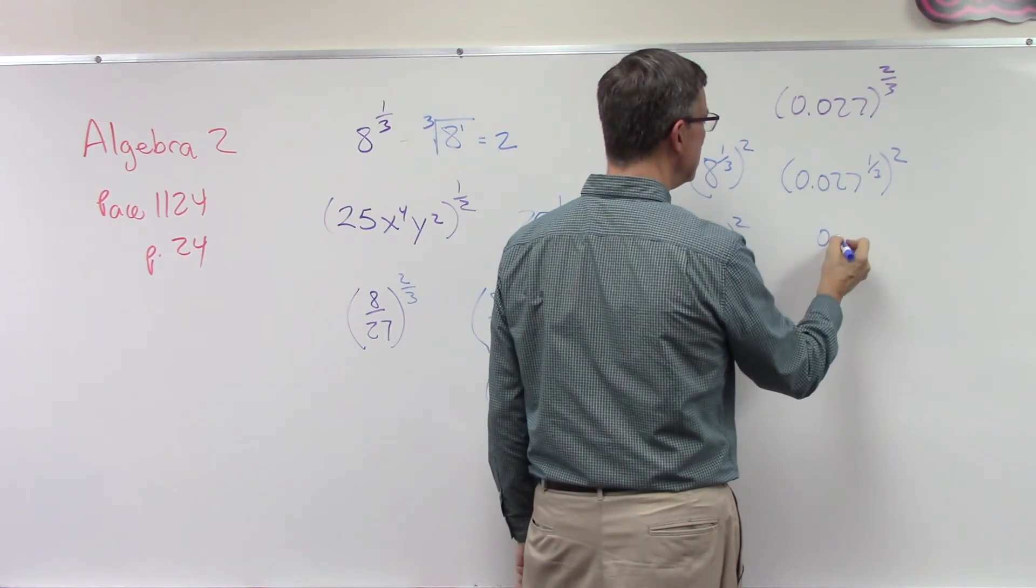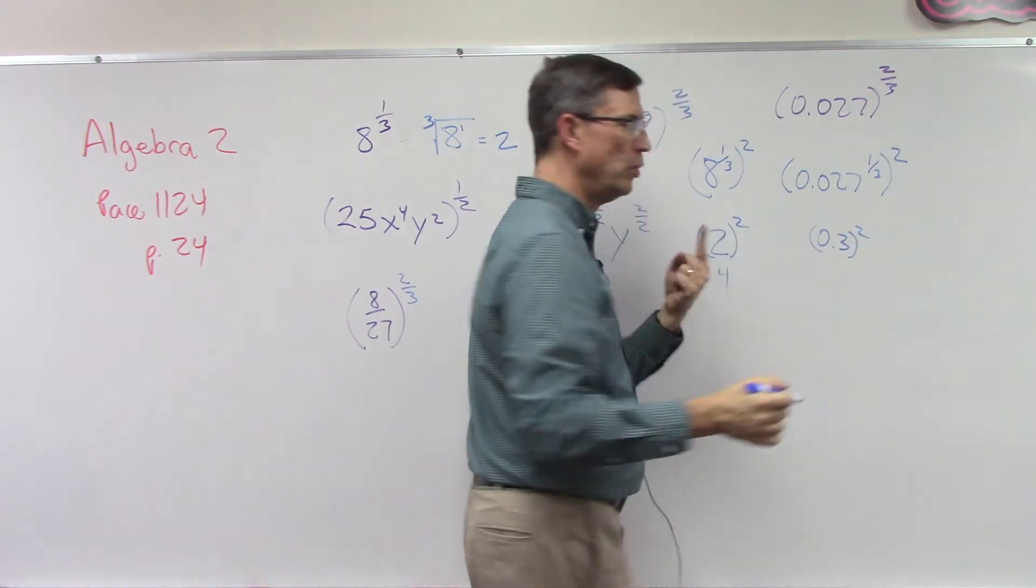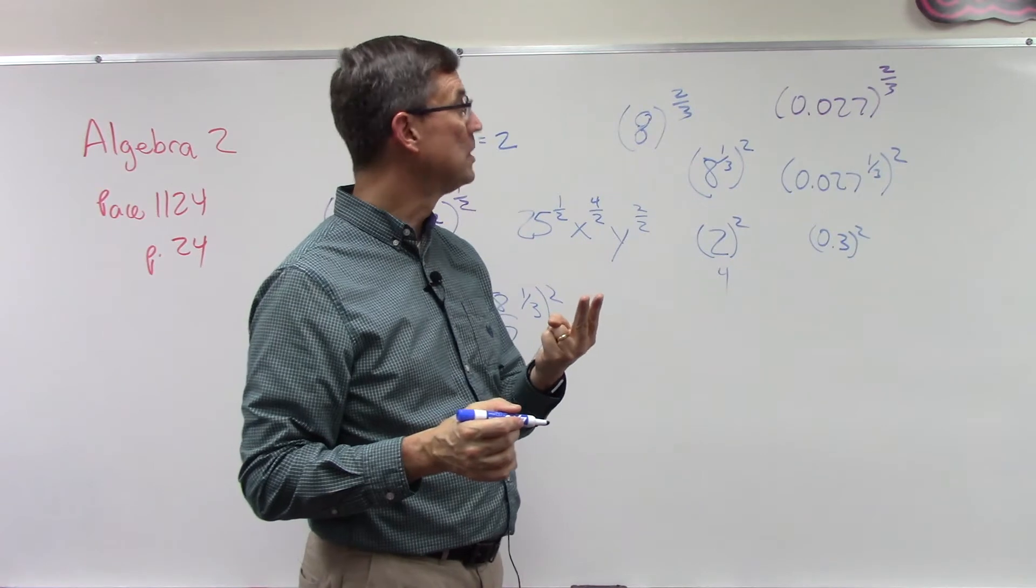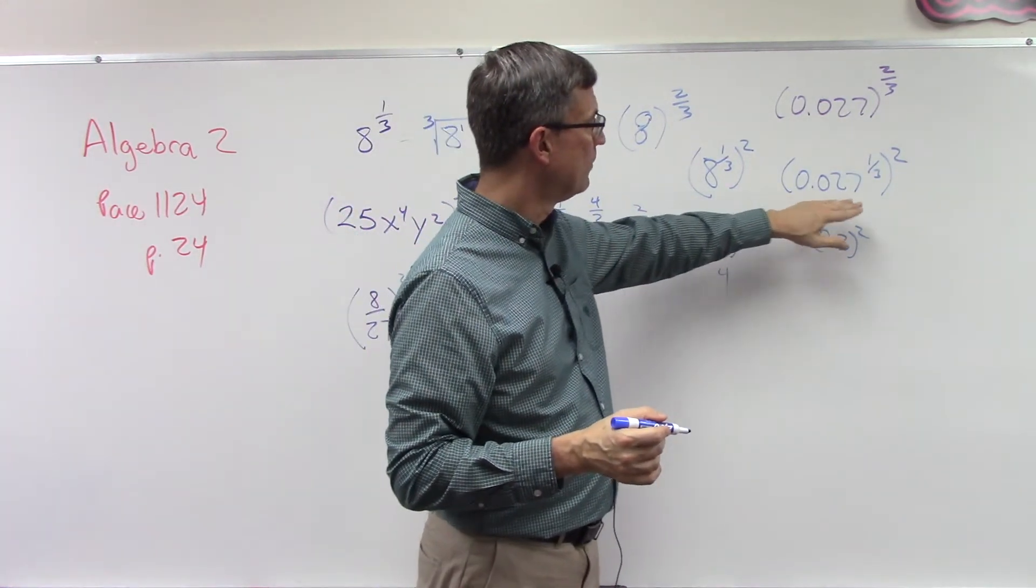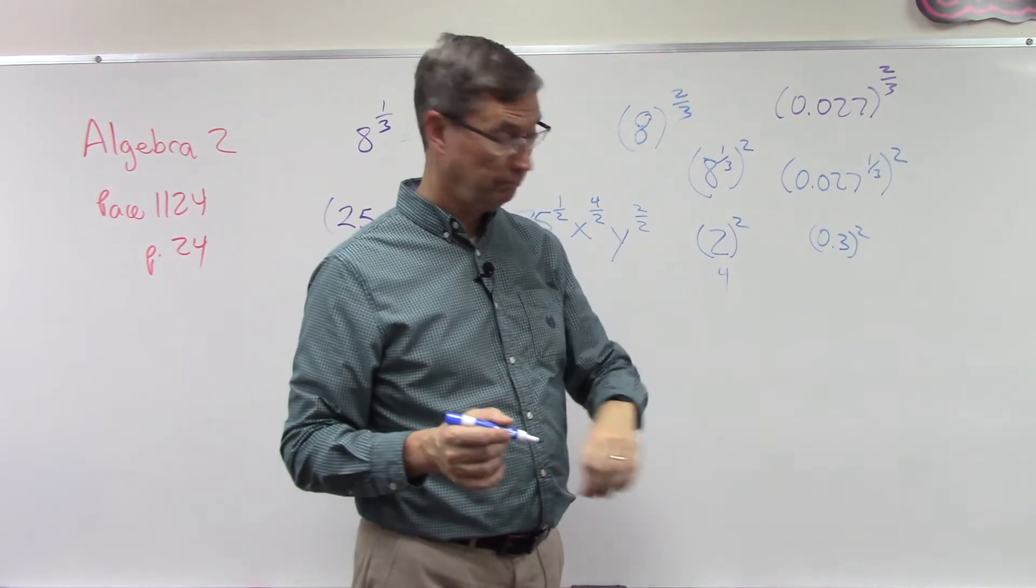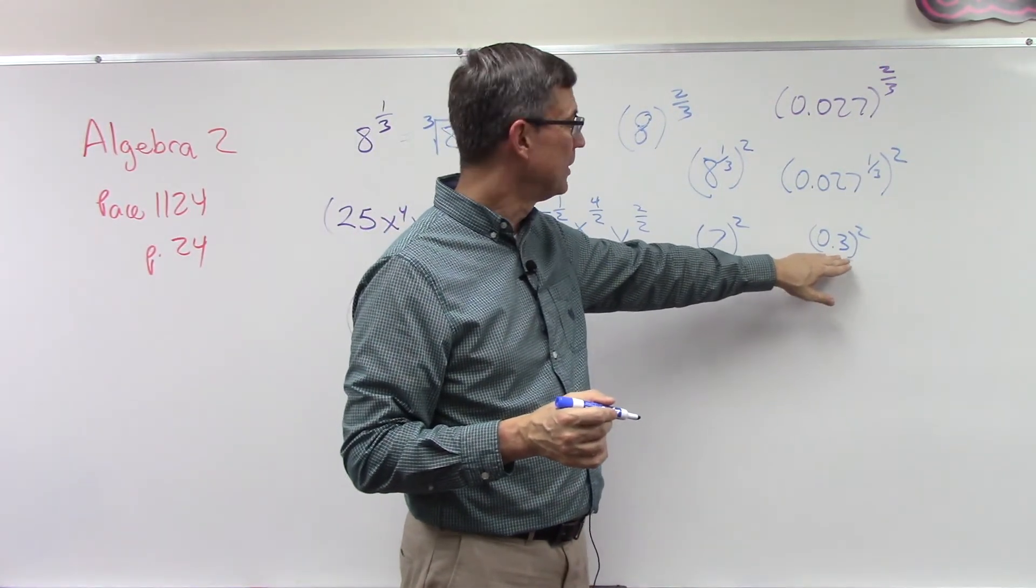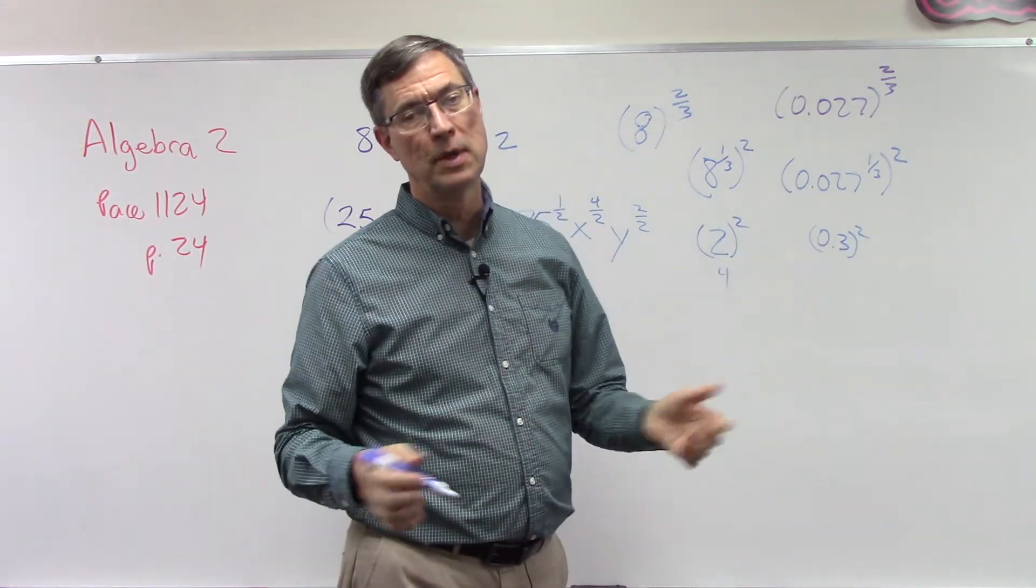I propose to you that it would be 0.3, because when you do 0.3 times 0.3, you get 0.09. Take 0.09 times 0.3, and you have to add another decimal place, then you get the 27. Then it's a piece of cake to solve this. You just take the 0.3 times itself squared and you have the answer.